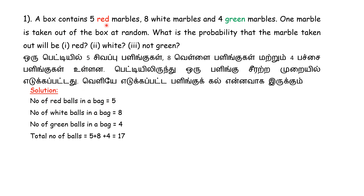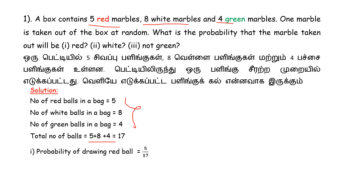The number of red balls is 5. The total number of balls is 17 (5 + 8 + 4). So the probability of drawing a red ball is 5 divided by 17.